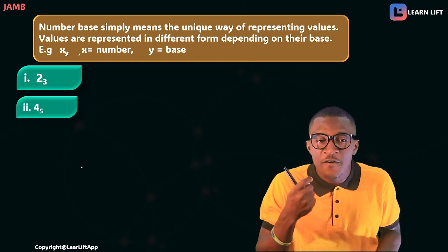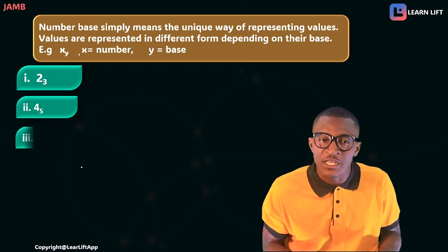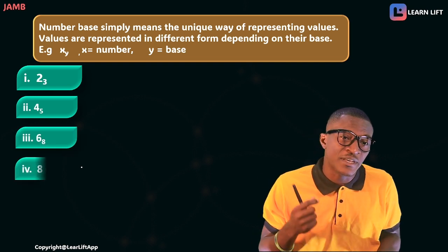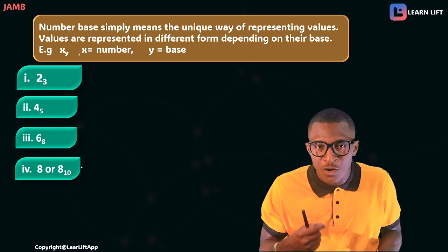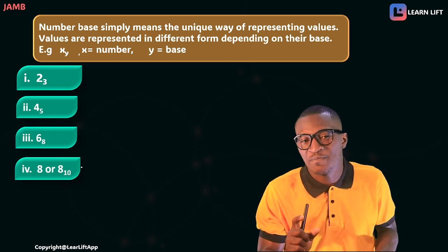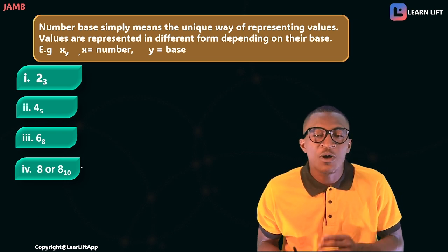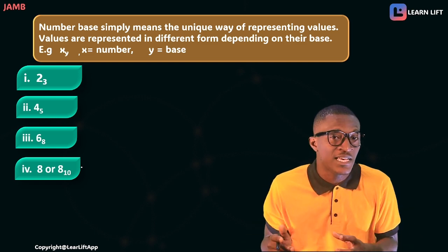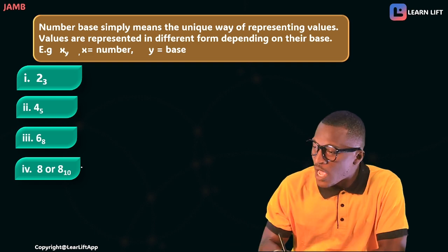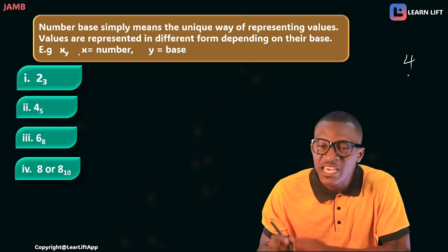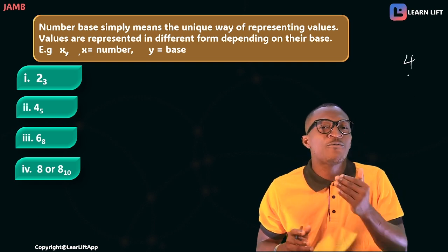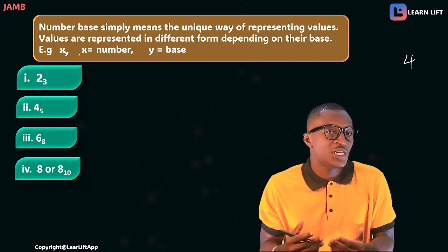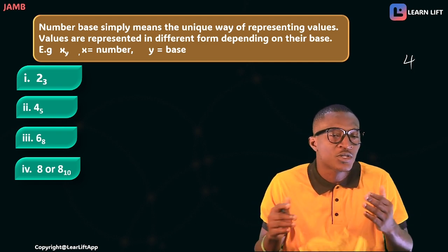You can see 4 in base 5 — four is the number and five is the base. You can see 6 in base 8 — six is the number and eight is the base. Now take note that anytime you see a number represented without a base, the general base is base ten. So if you see just the number four written alone, you should know that four is in base ten — that's why it's called the common base.